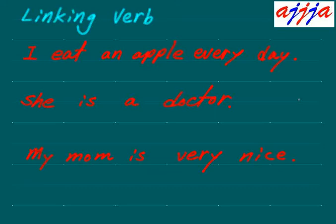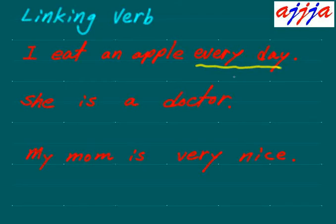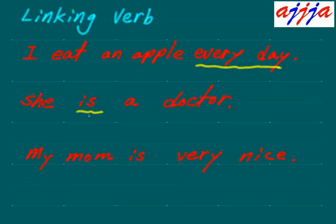Now we're talking about, on the top, the linking verb. What is it? Very simple. 'I eat an apple every day.' The best way to recognize a linking verb is you exchange it with an equal sign. What about 'she is a doctor?' Can you replace 'is' with an equal sign? Yes — she equals a doctor.